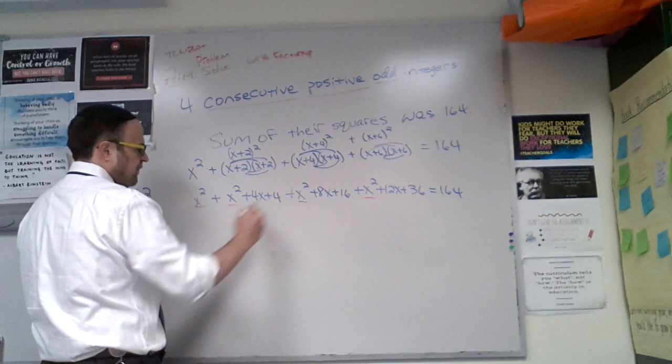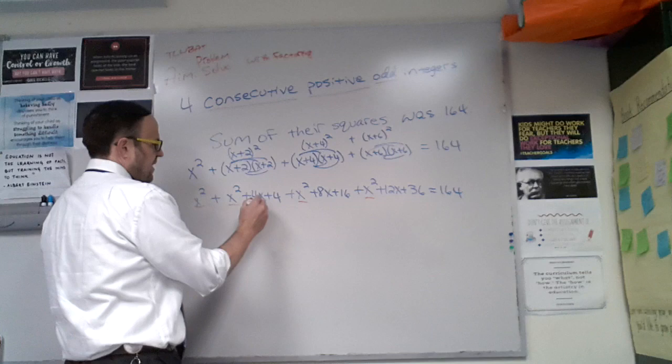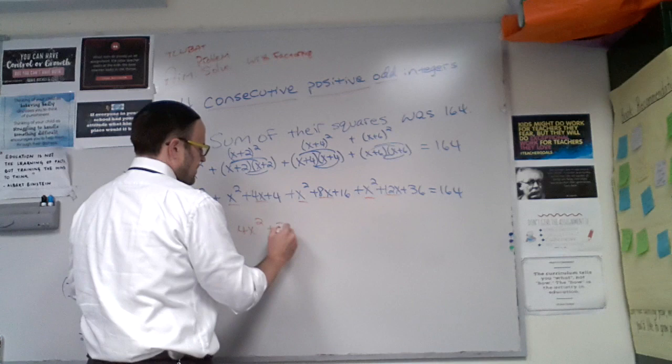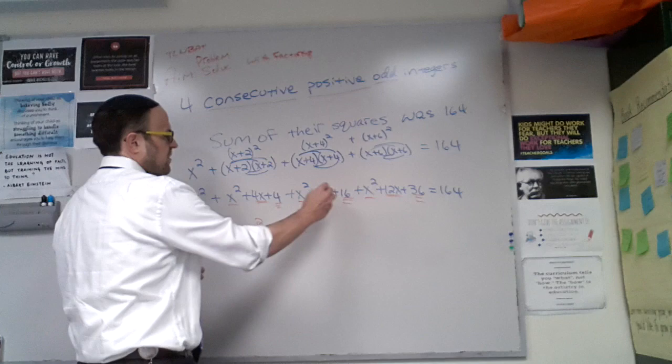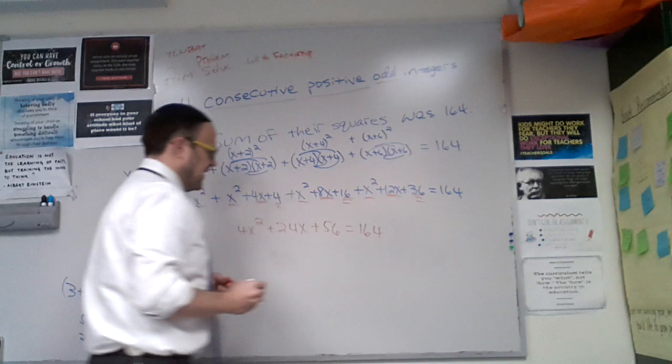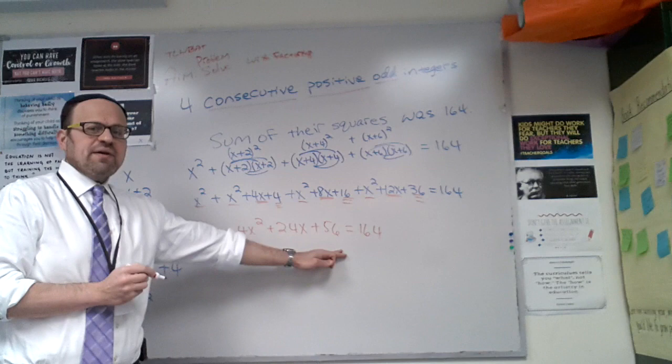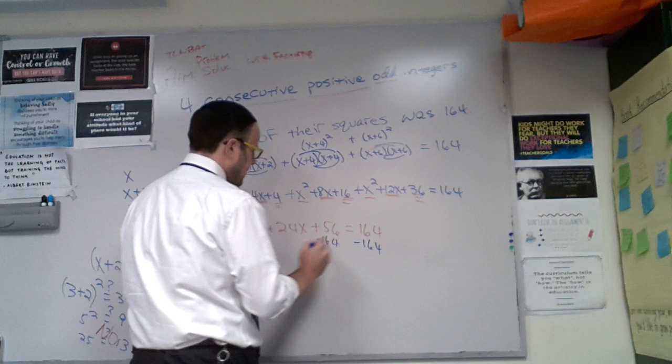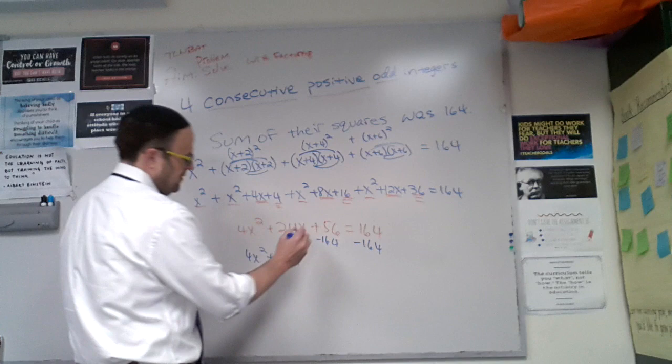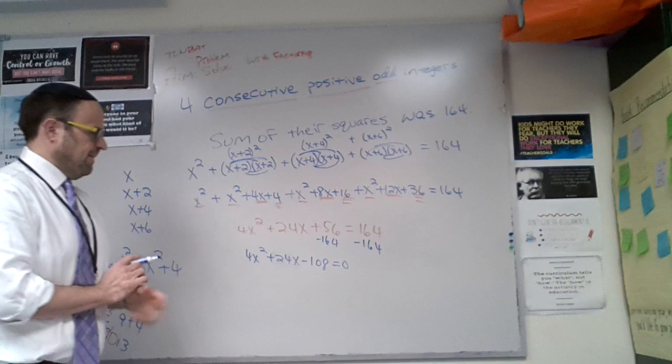Now we're going to combine like terms. I have 4x², and I have a 4x, an 8x, and a 12x. That's going to give me 24x. 4 plus 16 is 20, plus 36 is 56. Okay? Again, we're at a familiar point. We're at this point where we know what to do. So we know to subtract 164 so I can get one side equal to 0. 4x² + 24x - 108 = 0.